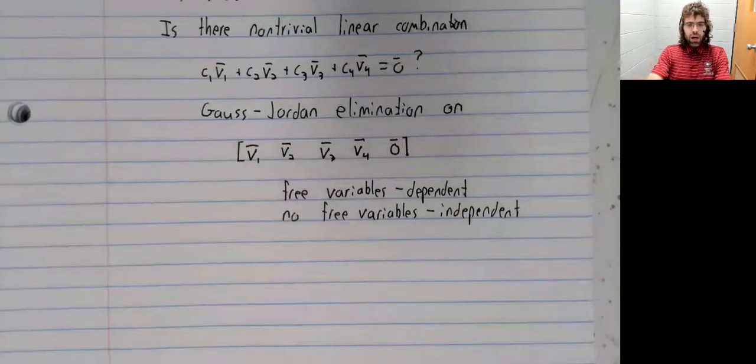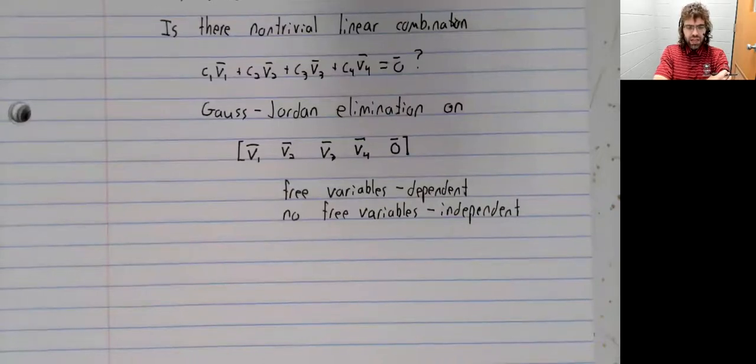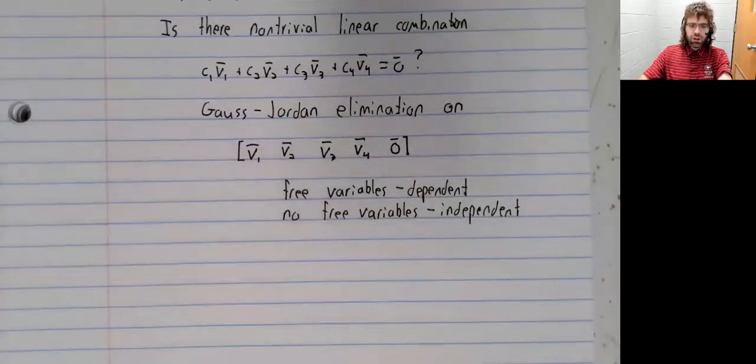There are three variables. I can see that instantly without doing any work. How can I see that? We're in R3.